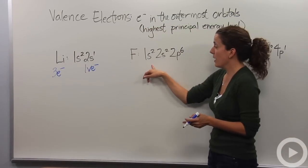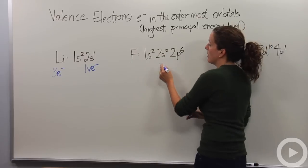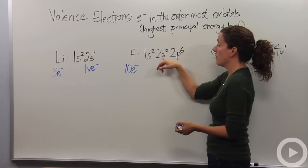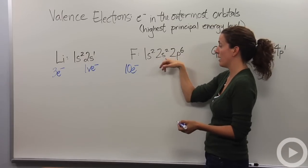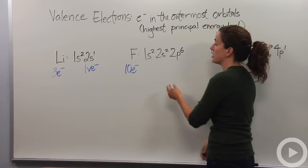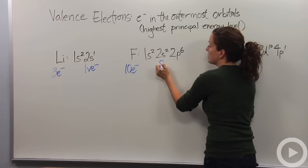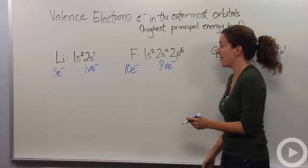Going on to fluorine, fluorine has a total of ten electrons total. However, only eight of them, the ones in the outermost shell, the S and the P, the second principal energy level, are going to be our valence electrons, the ones that are really going to make a difference. So in this case, we have eight valence electrons.